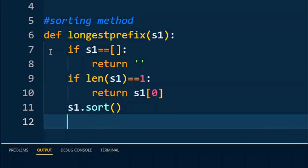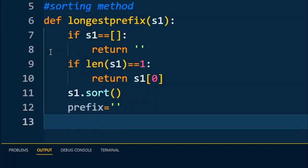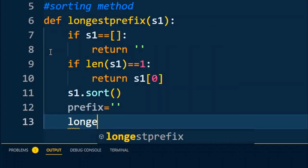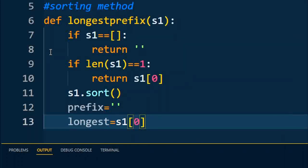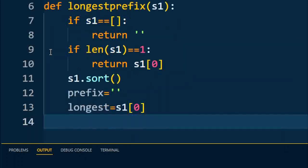Once the list is sorted, then we'll iterate one by one through all these strings. So I'll take the prefix as empty where I want to store the output, and I'll assume that my first string is the longest prefix.